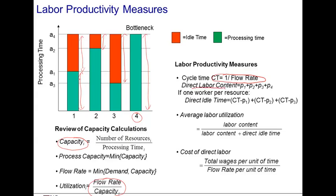Next, we define the direct labor content as the sum of the processing times. This is simply in the previous picture, the sum of the green bars. Next, we define for each resource the idle time as the difference between the cycle time and the processing time. So, the idle time for the first resource is exactly this difference here. We can add that idle time up across all resources to get the total idle time.